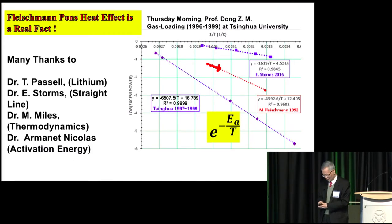So what's the conclusion? The conclusion is Frenchman Pons heat effect is a real effect. And high Z nucleus plus hydrogen or deuteron might be a candidate of fuel as well. Many thanks to Tom Purcell for guiding me to lithium, Storm's big help for this straight line, and Professor Miles' derivation for this straight line using thermodynamics and Aron theory. Particularly, the student of, former student of Professor Biberian, Armanet Nicholas, he provided me all the information about activation energy.